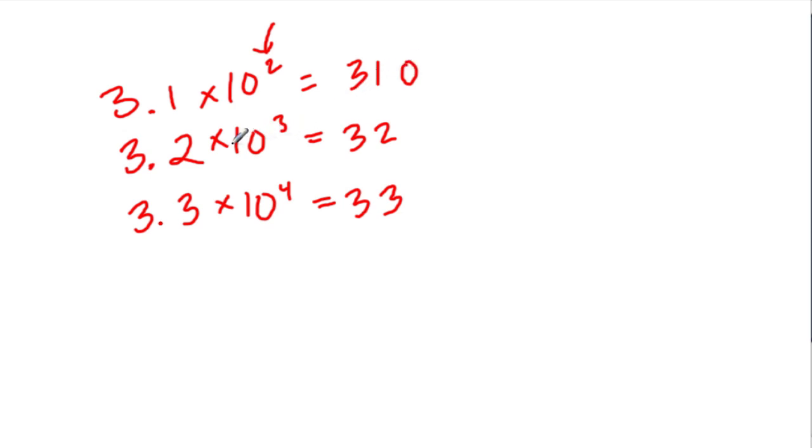Now, our decimal point in the next example, we're multiplying by 10 three times. So it goes 1, 2, 3. 3,200 is the answer.